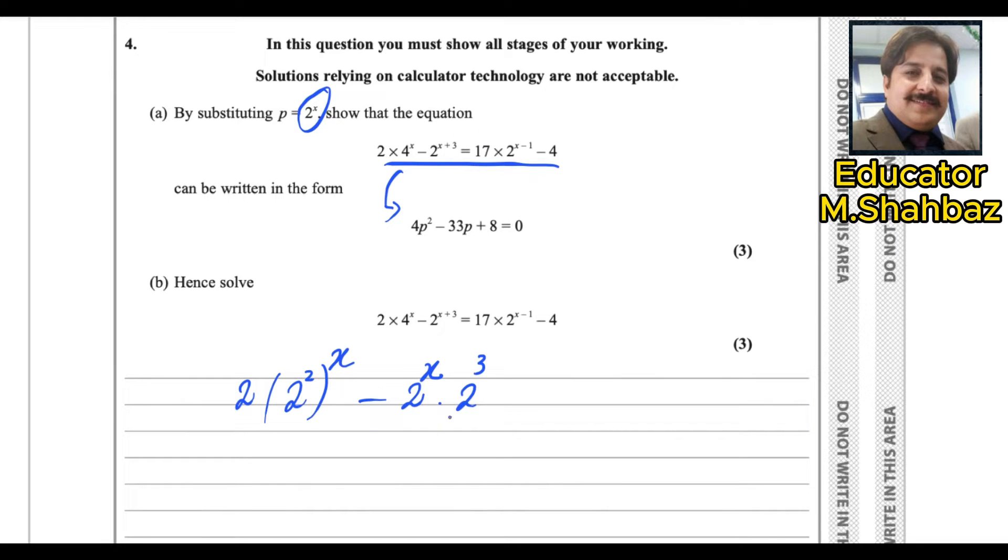2 power x plus 3 into this form because when bases are same, powers are added, still you will get the equation, the same equation. And this one could be changed into 2 power x into 2 power x, and minus 4.